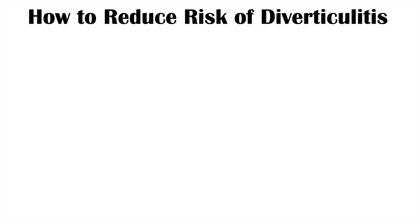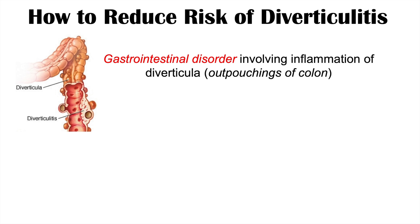To begin, I want to quickly talk about diverticulitis — what it is and what happens. Diverticulitis is a gastrointestinal disorder involving inflammation of diverticula, which are outpouchings of the colon — your large intestine. Over time, little pouches can form if there are issues with your large intestine or bowel structure. What happens is that a piece of feces can block one of these pouches, leading to inflammation. That is diverticulitis.